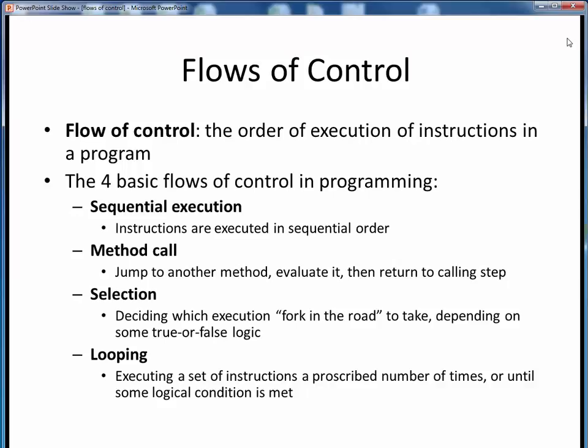As a quick refresher, a flow of control in computing simply represents the generalized path of execution of the instructions in any program. There are four basic flows of control in programming, two of which we've already seen and two more which we'll be covering next.